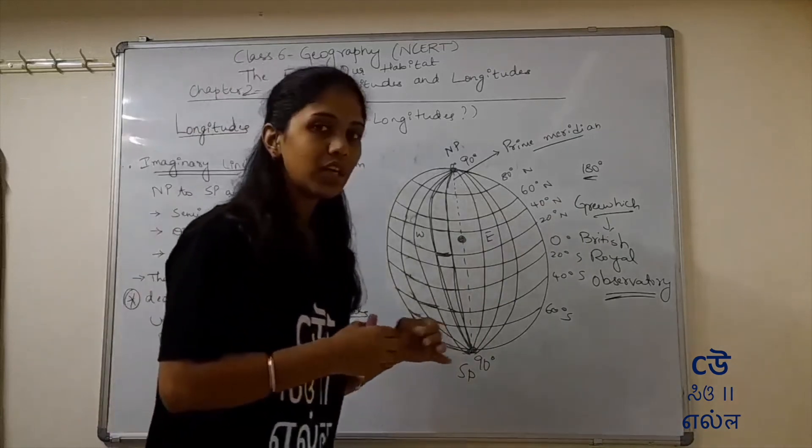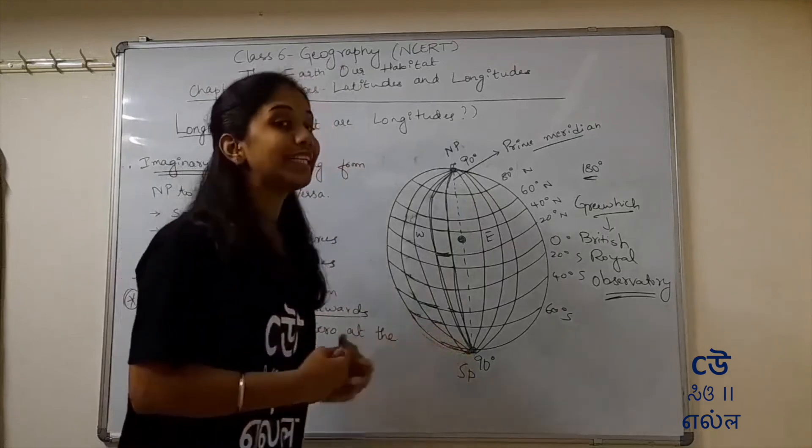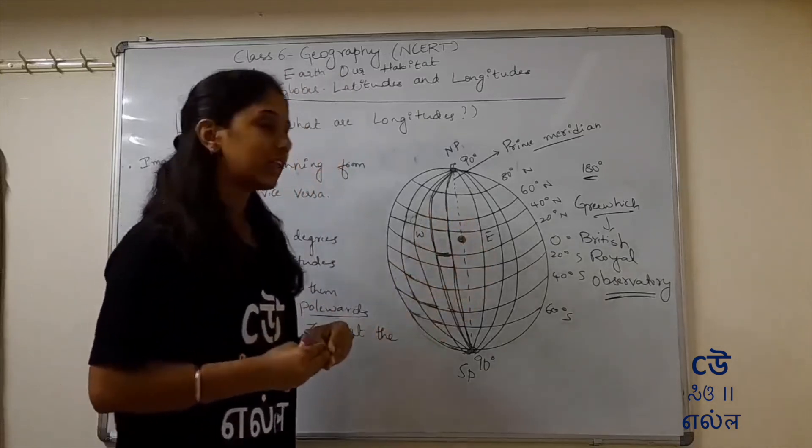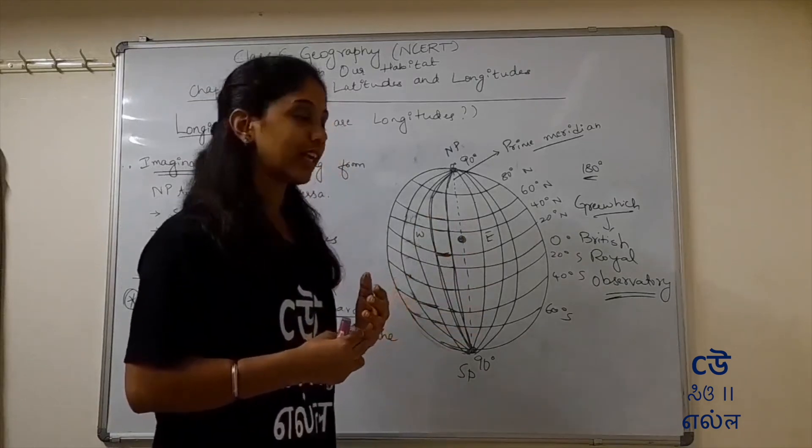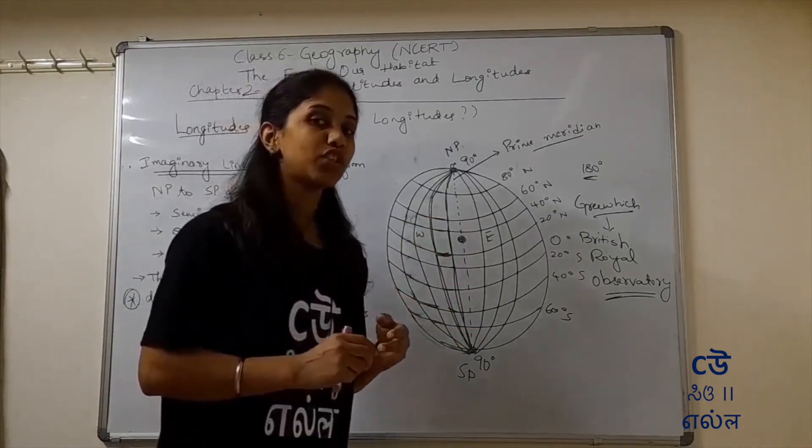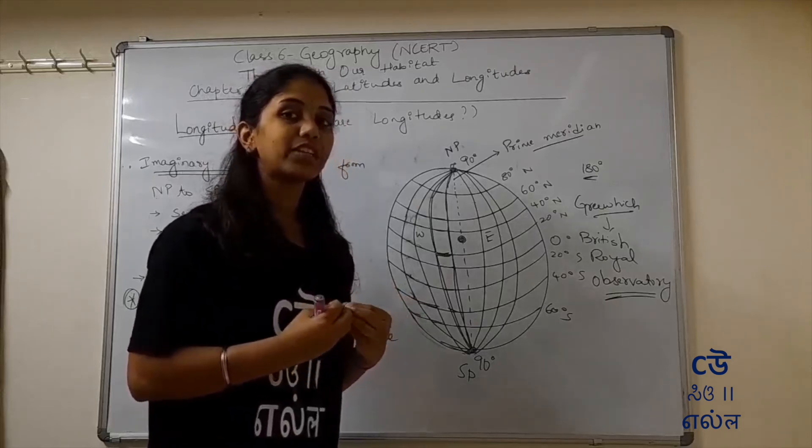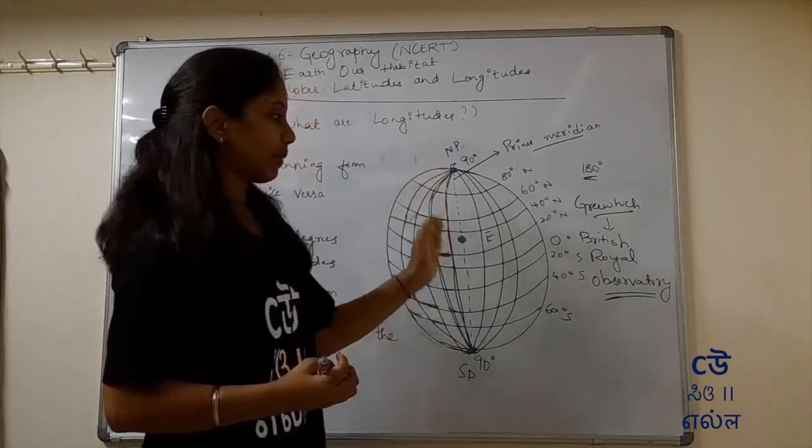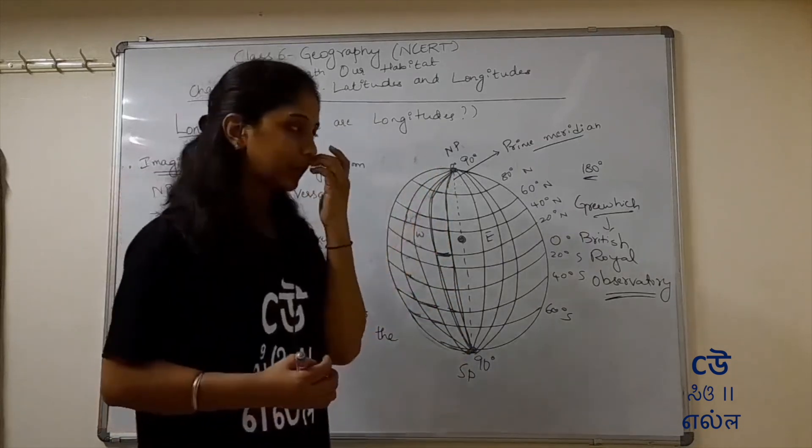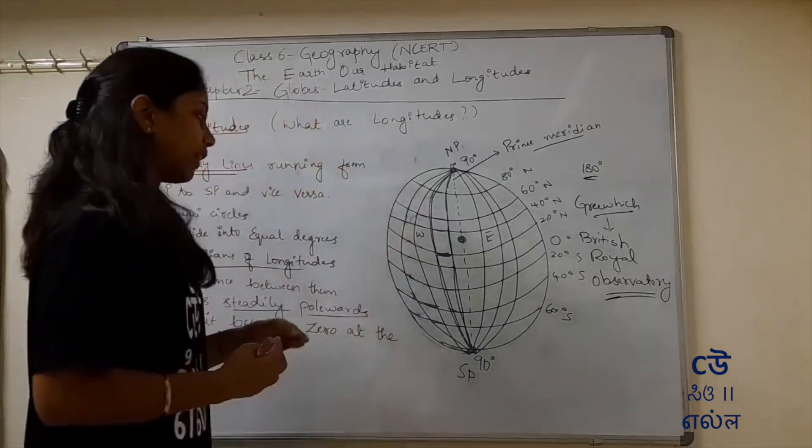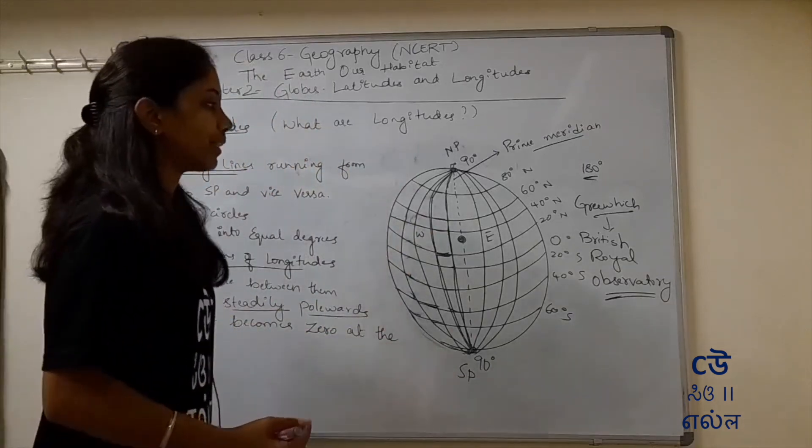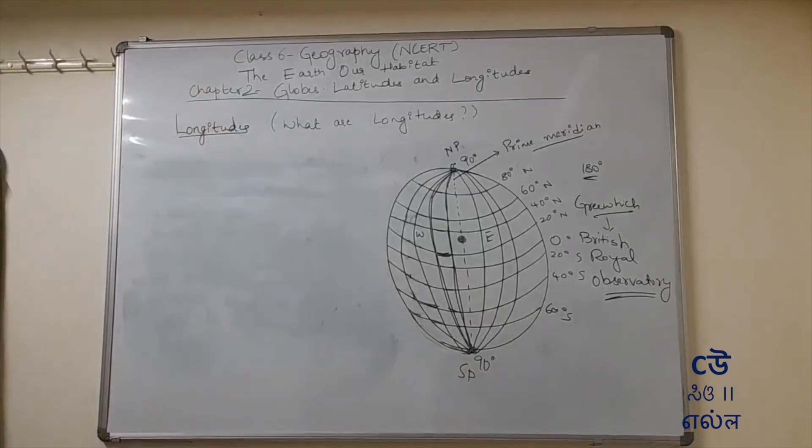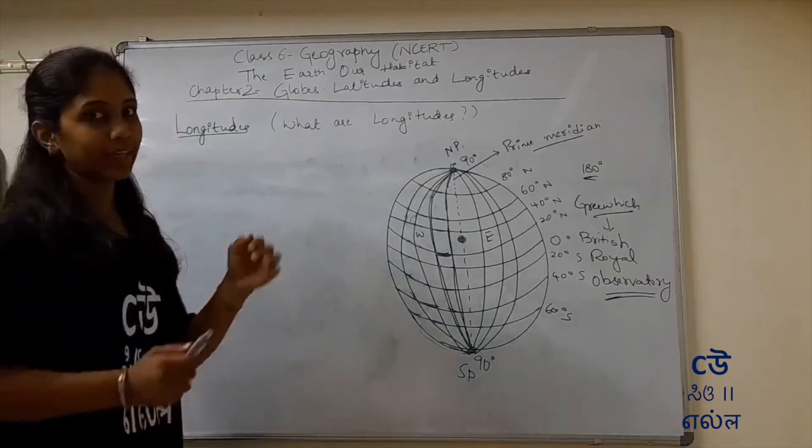For latitudes, we discussed what to do. Latitudes tell us which place is on which latitude. And we discussed heat zones. Similarly, longitudes play an important role. They are useful in determining seasons. And to know the time. Longitudes are very important for determining time. It is useful in determining the time and place. So now you understand prime meridian and longitudes.